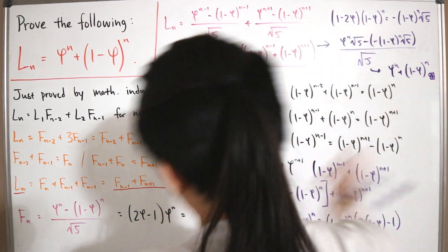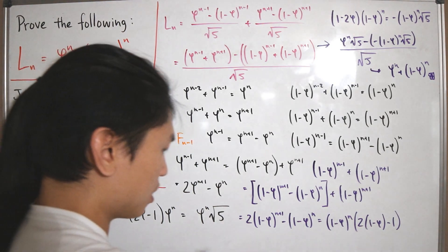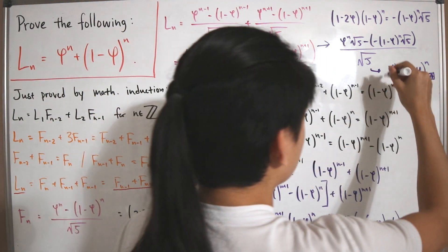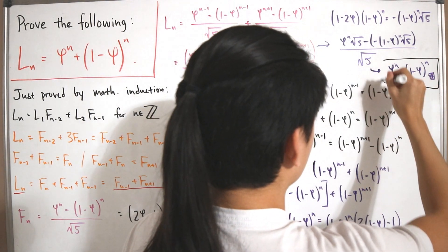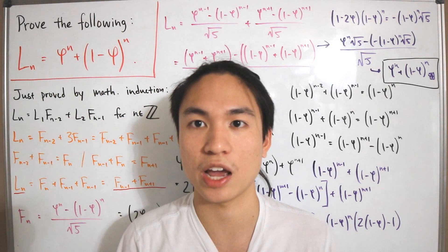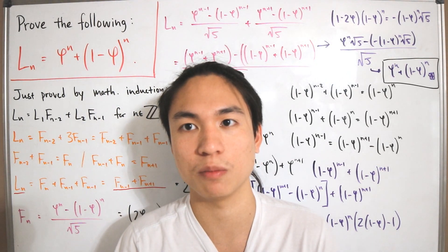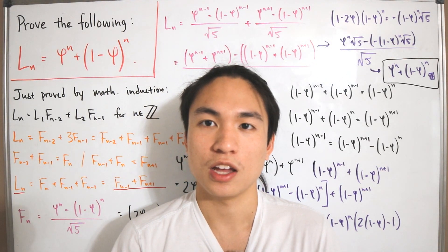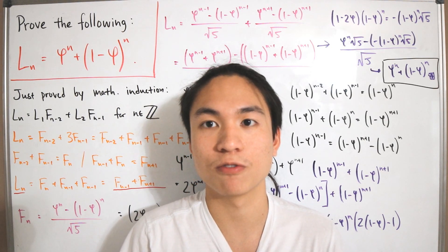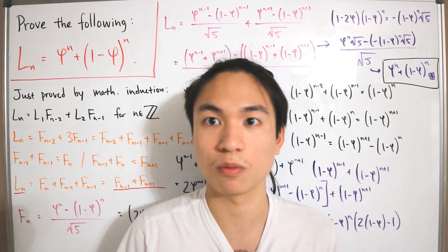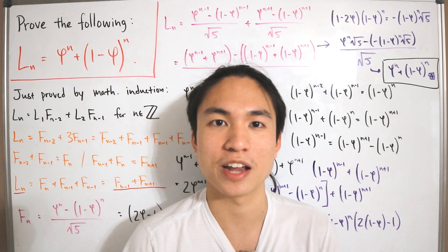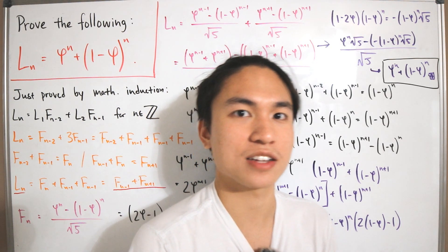This concludes the proof that L_n = phi^n + (1-phi)^n, a nice identity relating the golden ratio, Lucas numbers, and Fibonacci numbers. The link to the derivation of Binet's formula for Fibonacci numbers is in the description below.